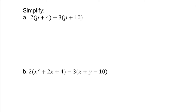Simplify means you do more than one operation. In this first one we see there is a parenthesis, and it's very important we understand that parenthesis means multiplication, so we have to distribute it using the distributive rule. We have 2 multiplied by p, and also 2 multiplied by 4, and also 3 multiplied by p, and 3 multiplied by 10 — so we have two sets of parentheses we must remove.